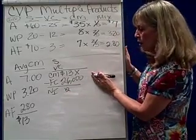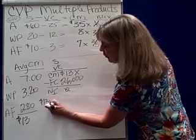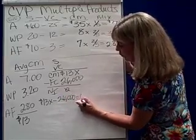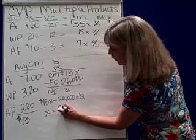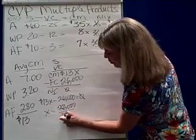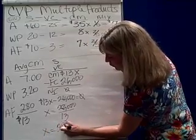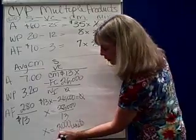Solving for X, that would be 13X contribution margin minus fixed cost of $26,000 is equal to zero. So X is going to be equal to $26,000 divided by 13. X is 2,000 units. So at break even, I'm selling 2,000 units.